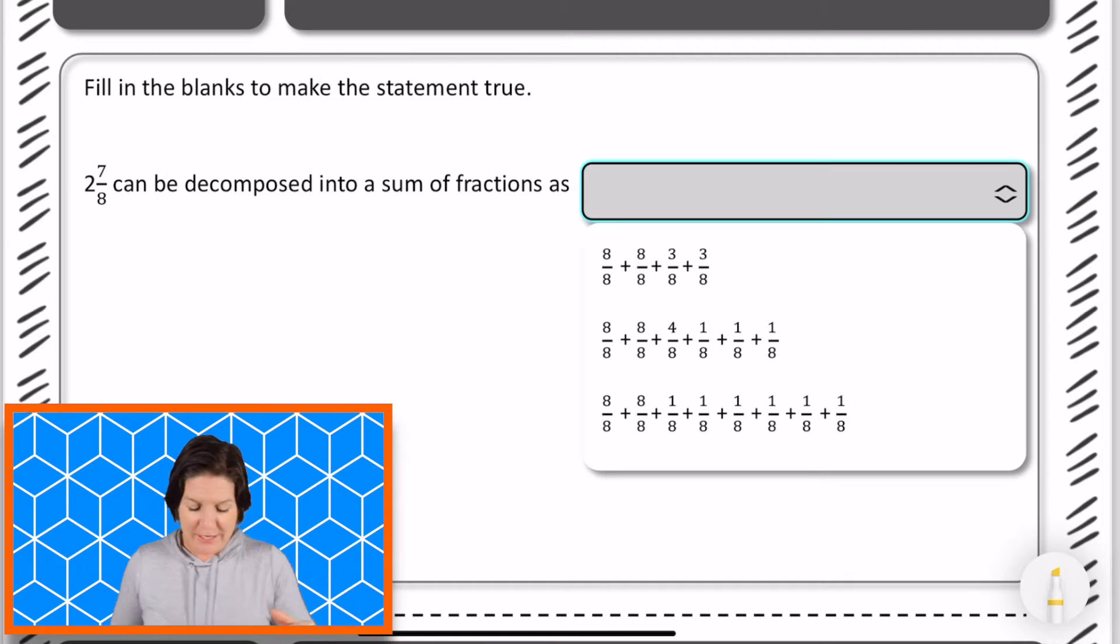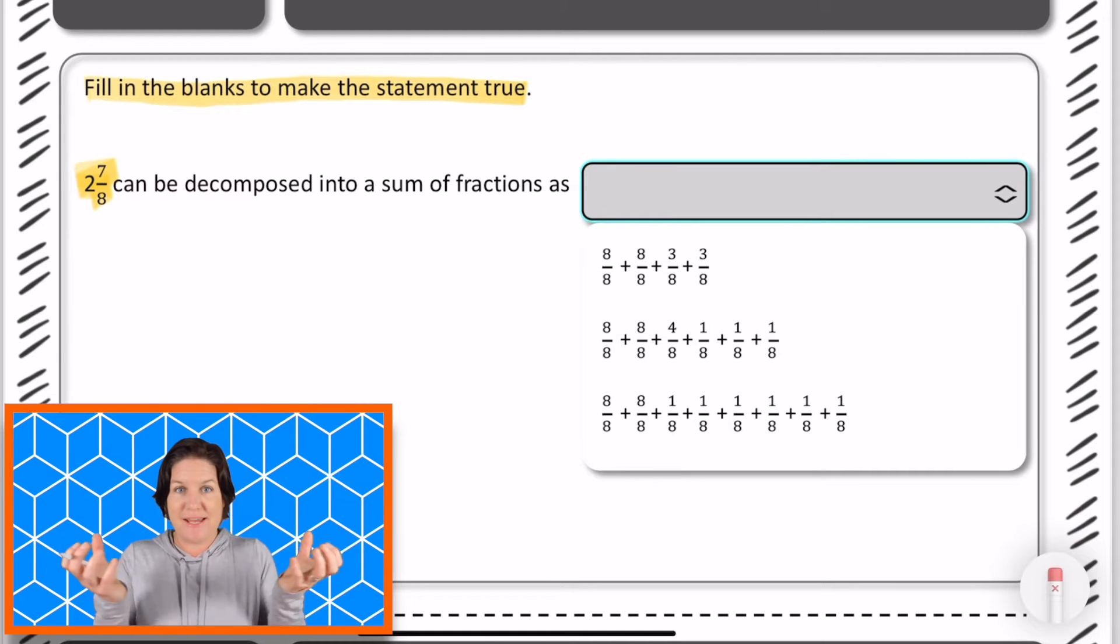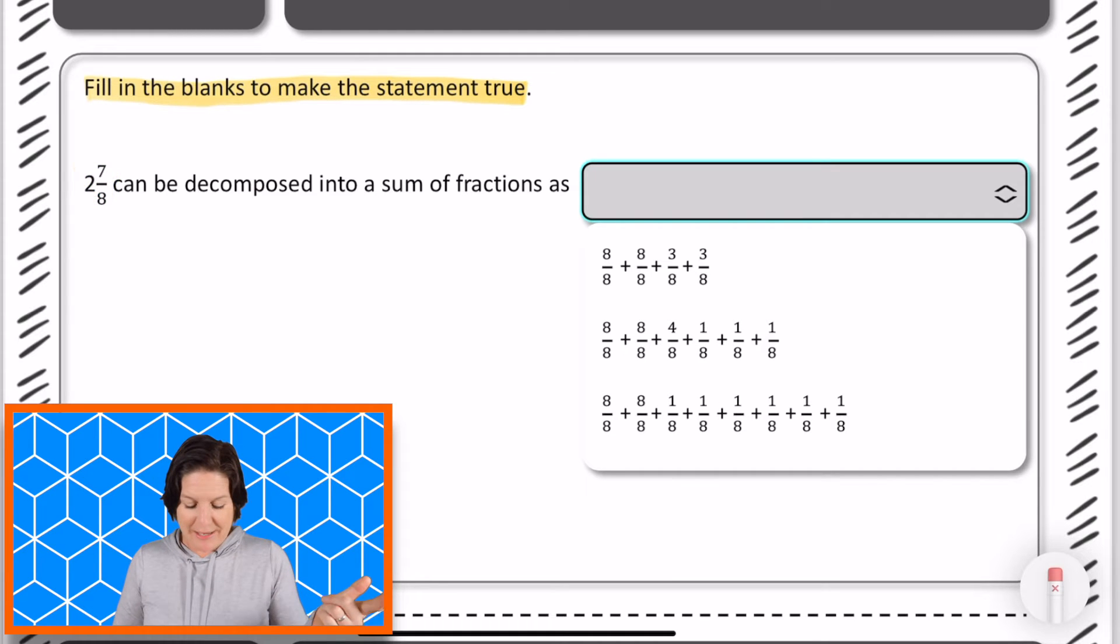Welcome back fourth grade. All right, so this one says to fill in the blanks to make the statement true. The statement says that two and seven eighths, that's a mixed number. That means we've got a whole and a fraction together. That's a mixed number that that fraction two and seven eighths can be... whoa, where'd it go?